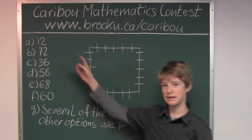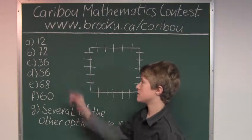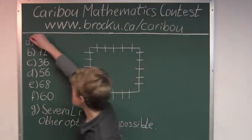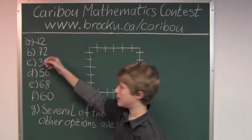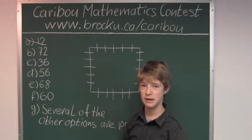So let's look at the options and see which number is divisible by 24. Let's look at 12, that is not divisible by 24. Now 72, that is divisible by 24 because it is 3 times 24.